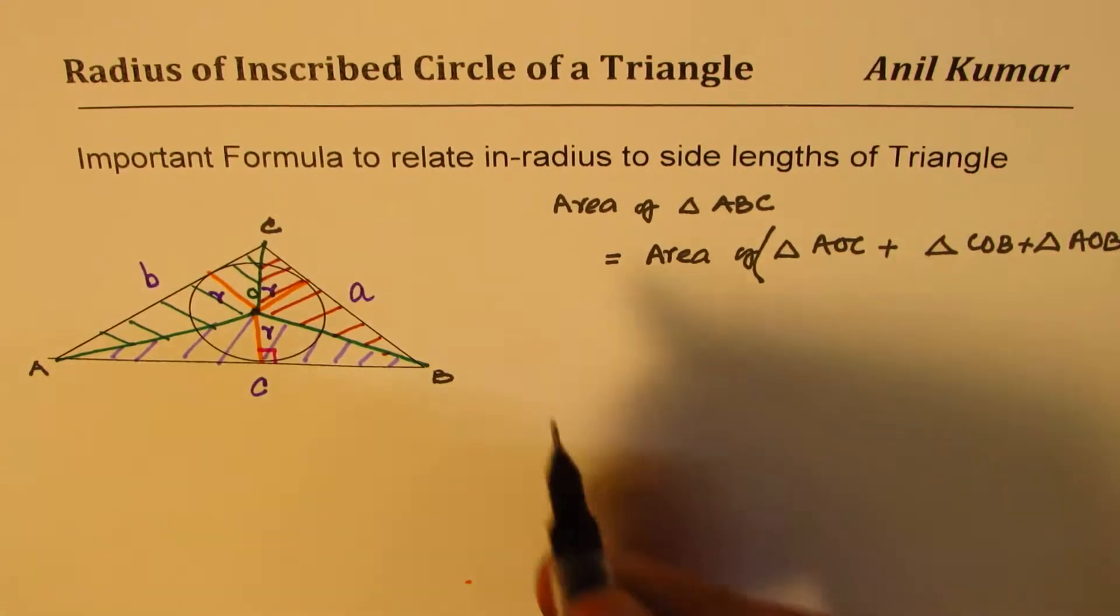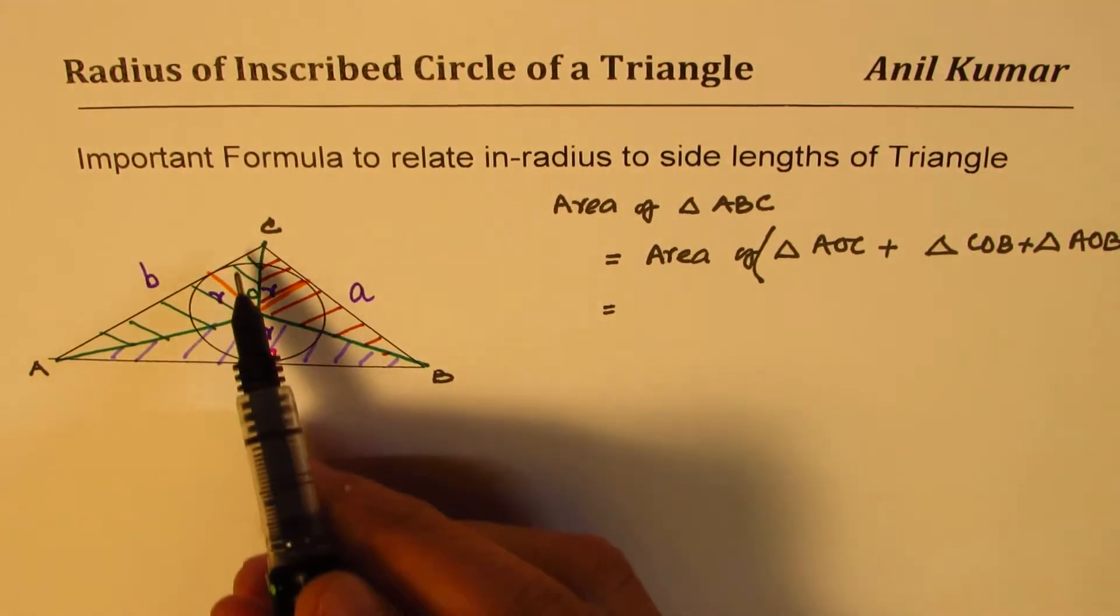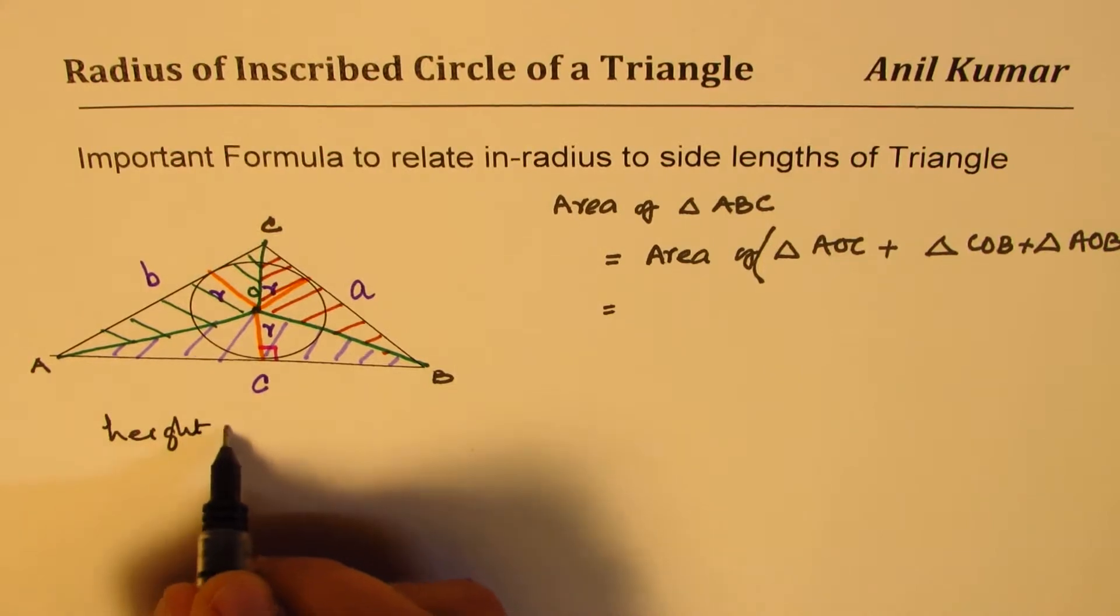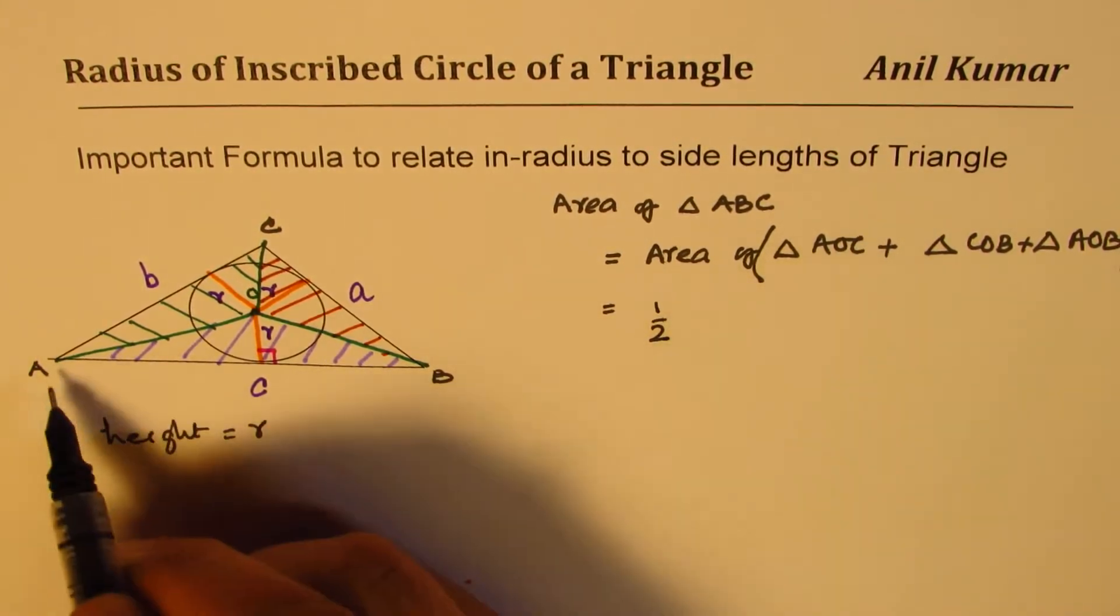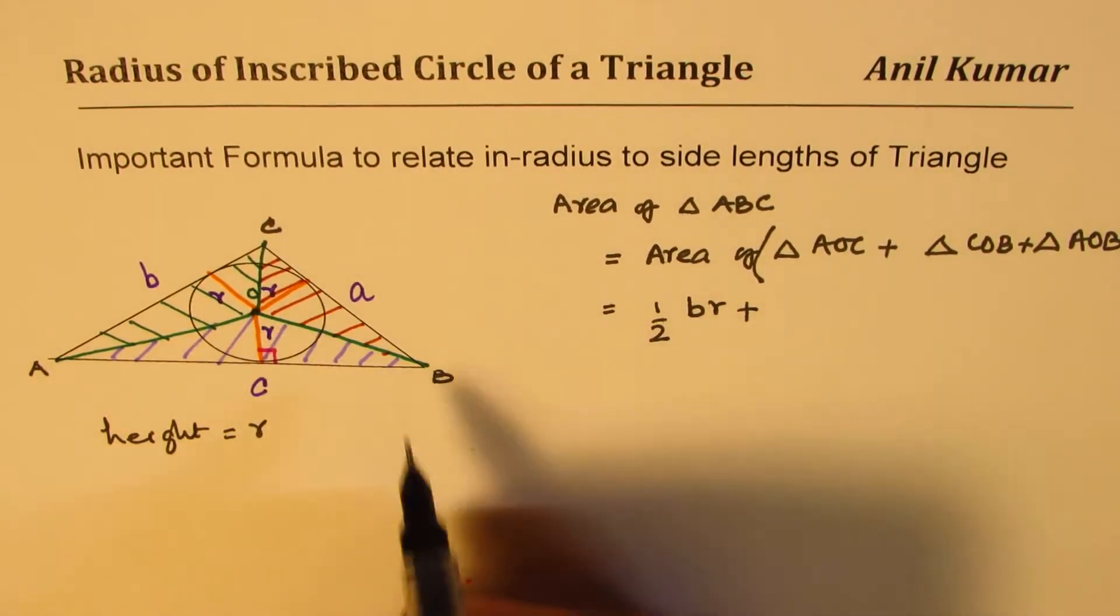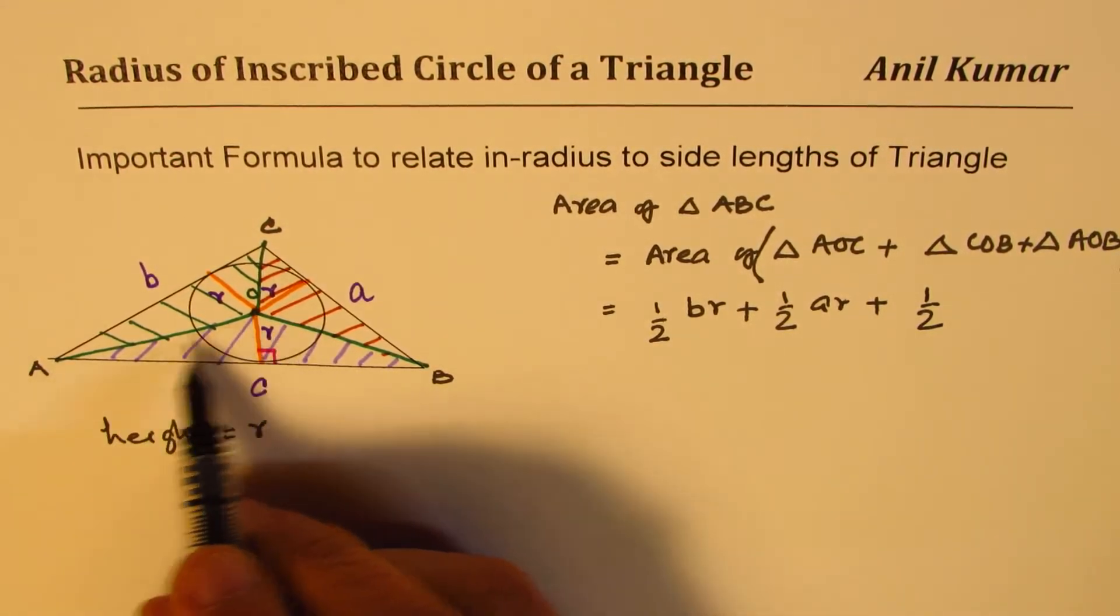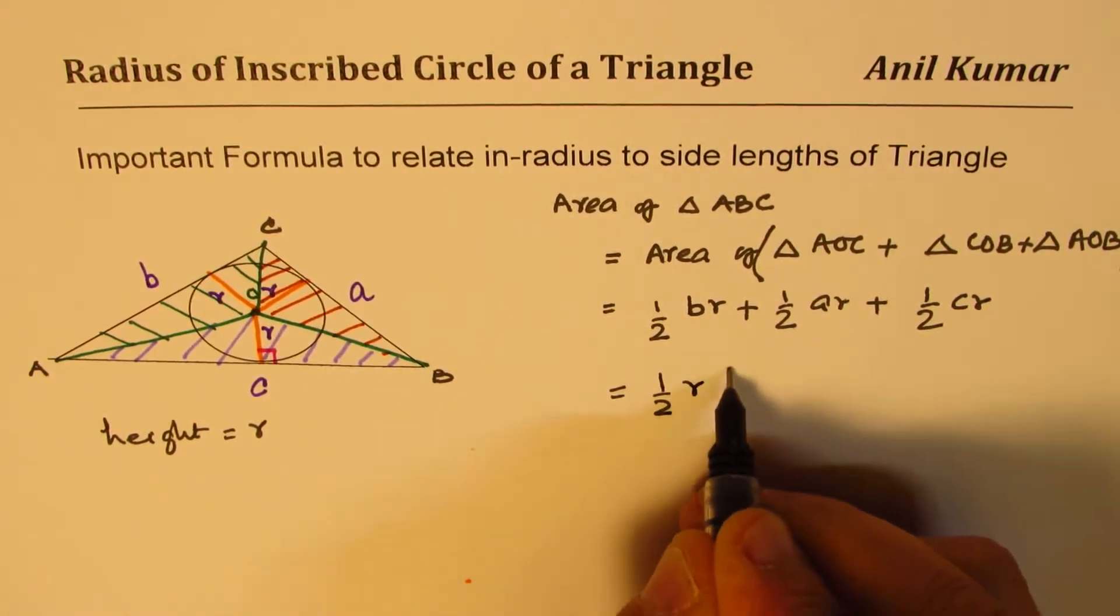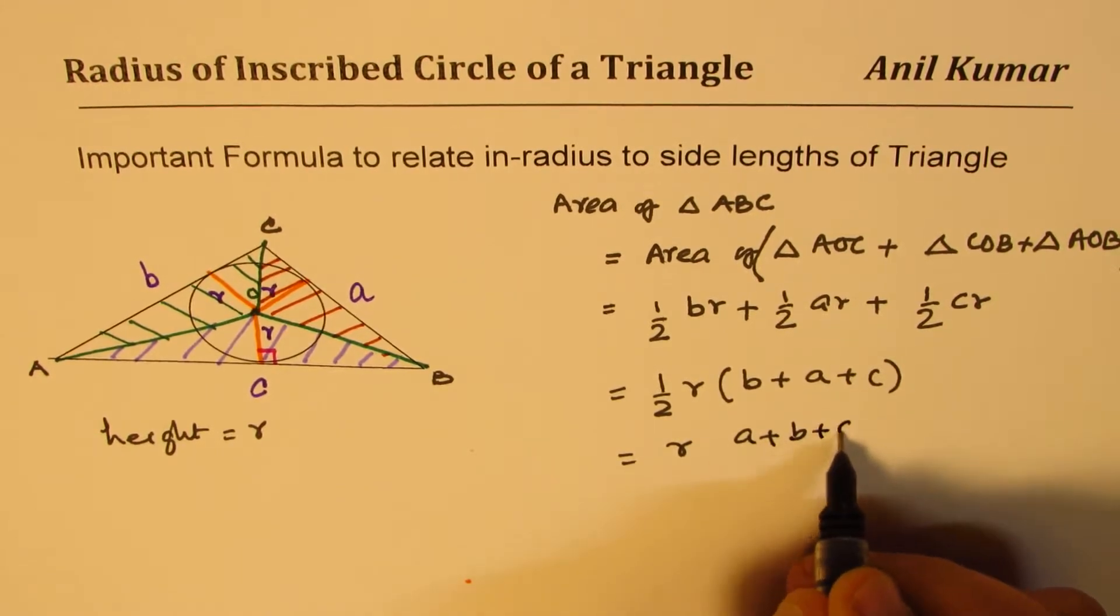Now, area of triangle is half base into height. So we could write the area of this triangle is half of this side times height. Area of the other triangle will be half of the other side times height. Now, in all the three cases, height is R, that is the height. So we can write down these areas as half of area of triangle AOC will be B times R plus COB will be half times A times R plus triangle AOB, it will be side C times R. So we can take half R common, we get B plus A plus C, or we can say it is R times A plus B plus C divided by 2.